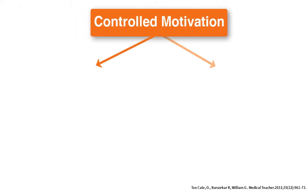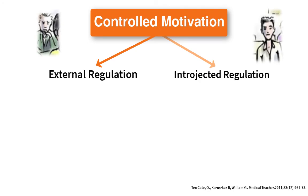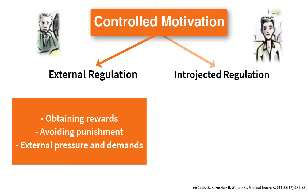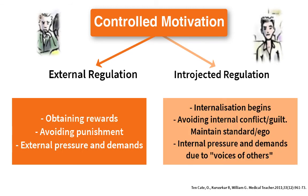Controlled motivation comes in two forms of regulation. First, external regulation — the classic form of extrinsic motivation, seeking external reward or avoiding external punishment, driven by external pressure and demands. A student may say: 'I will only study to get good marks, or to avoid upsetting my teachers.' Second, introjected regulation, where reasons to engage become more internalized as internal pressures to maintain a certain standard or ego, or to avoid internal conflict, guilt, or anxiety. The messages of others have been internalized, so the source remains mainly external. A student may say: 'If I fail, I will let everyone down.'